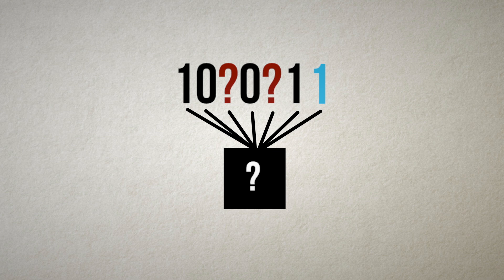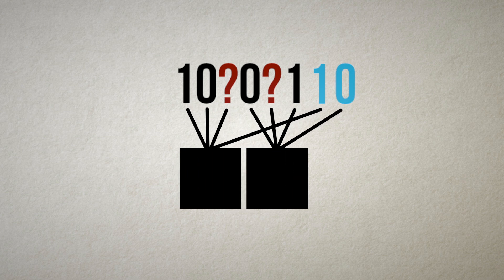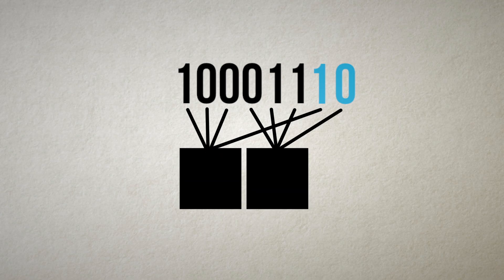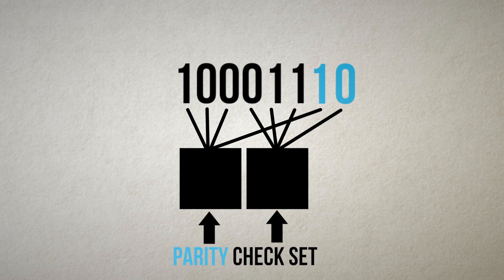To decrease the chances of failure, we can divide up the message into distinct sets and include multiple parity check bits, where now each parity check bit protects a different set of bits from a single erasure. We call each of these sets a parity check set.